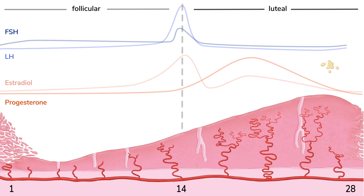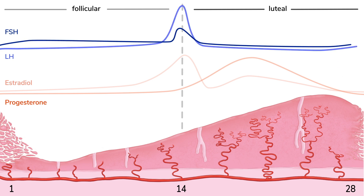This decline in ovarian hormones also removes the negative feedback effect they had on GnRH, so FSH and LH levels slowly start to rise again. With the onset of bleeding and rising gonadotropins beginning to recruit a new set of follicles, we're back at day one of the cycle.